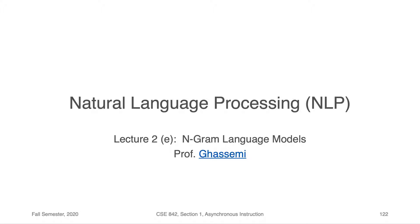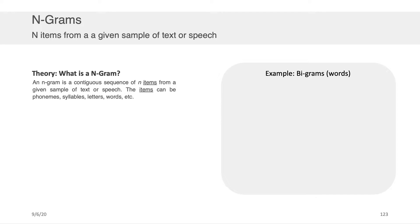Hi, Professor Cassini here. In this part of the lecture, we're going to be speaking about n-gram language models. So first, let's start off by defining what an n-gram is. An n-gram is very simply a contiguous sequence of n-items from a given sample of text or speech.